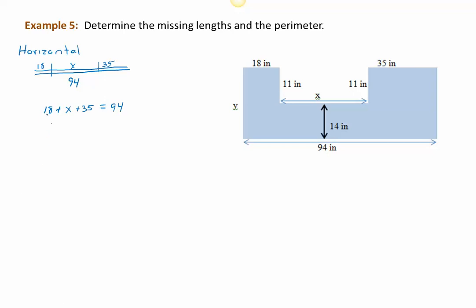On the left, we have 18 and 35. We add those together and get 53—don't forget the X is still there—and bring down the 94. To undo the addition, we need subtraction. Whatever we do to the left side, we do to the right side. On the left, 53 minus 53 gives us zero, and only X remains. On the right, 4 minus 3 is 1, and 9 minus 5 is 4. So X is worth 41 inches.